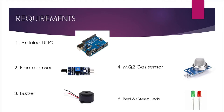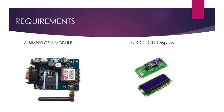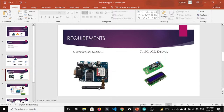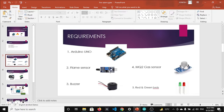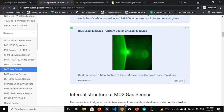The requirements for this project include an Arduino Uno board, the flame sensor, the MQ2 gas sensor, a buzzer, and red and green LEDs. The fifth requirement is a GSM module which helps trigger the SMS alert, and lastly we need an LCD display to show data like the current smoke analog value and the flame sensor state — whether it is high or low. These are the seven components needed for this project.